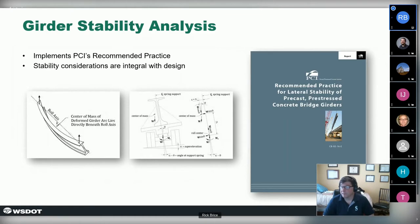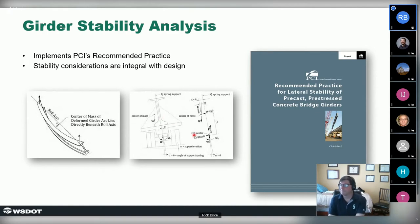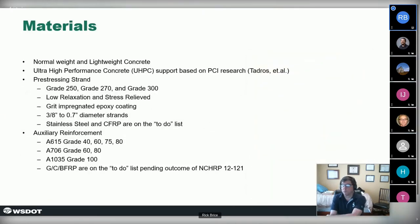Stability of long girders is a big deal — there have been cases where girders were picked up out of the precasting bed and fell over because people didn't think stability was an issue. Similar to a column design where you assume it's never perfectly straight, these beams are never perfectly straight and you never pick them up exactly on the centerline, putting the weight off-center so they want to roll. The same applies during hauling — you never get them exactly on the truck's center of gravity. All this stability analysis is built in.